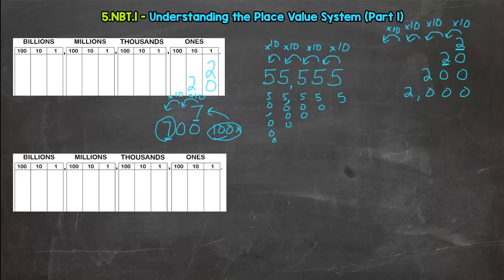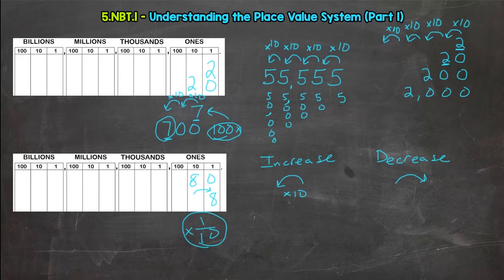Now if we go the other way, let's say we have an 80 here and we're comparing it to this 8, and we make a jump to the right. Every time we make a jump to the right or decrease the value by one place, we are taking one-tenth of the value. If we increase the value, which is a jump to the left, we increase the value by 10 times. If we decrease the value or make a jump to the right, we take one-tenth of the value.